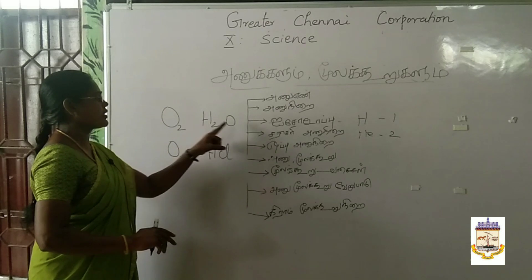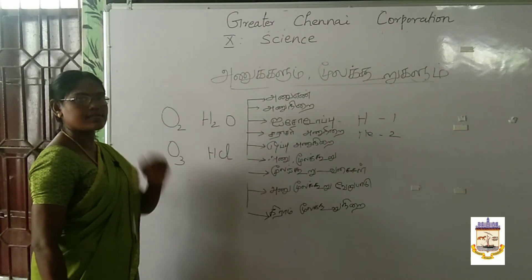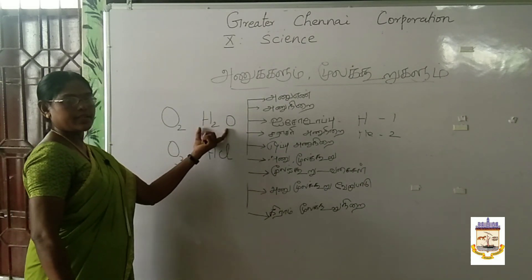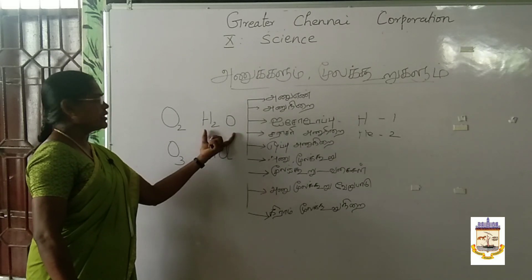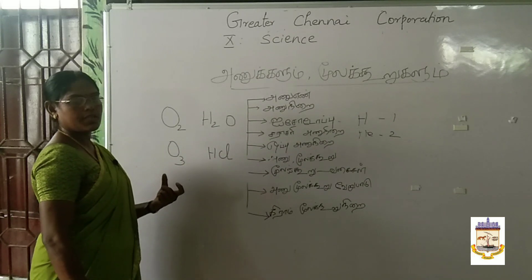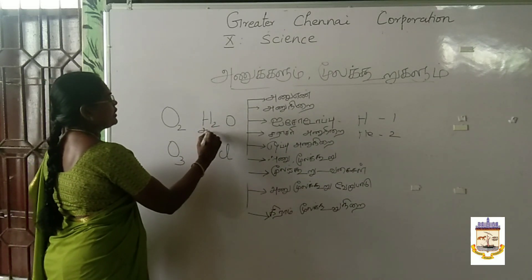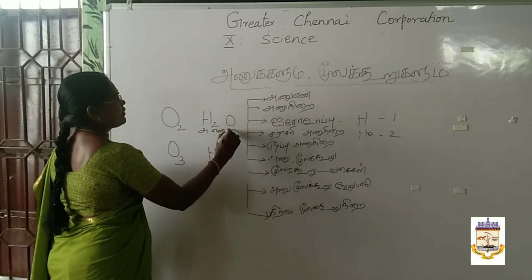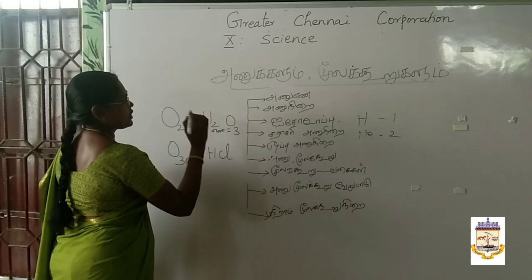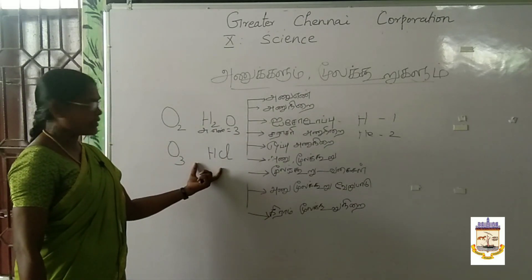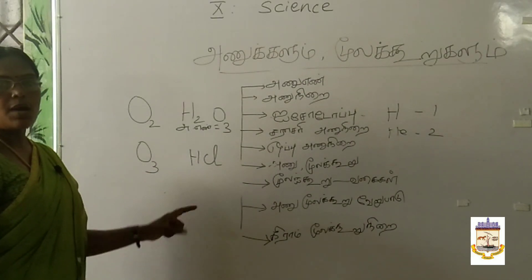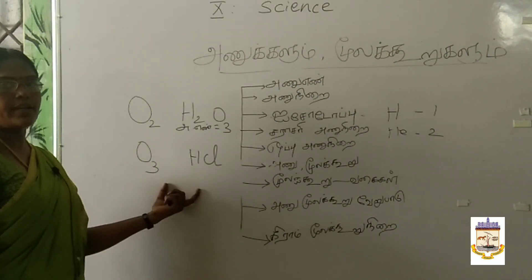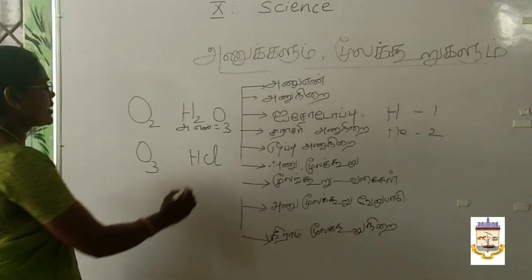How many hydrogen atoms are there? Two hydrogen atoms. How many oxygen atoms are there? One oxygen atom. So, how many hydrogen atoms does H2O have? Three hydrogen atoms total. How many molecules can hydrogen have? One hydrogen atom. That consists of chlorine atoms. How many oxygen atoms? The two atoms.